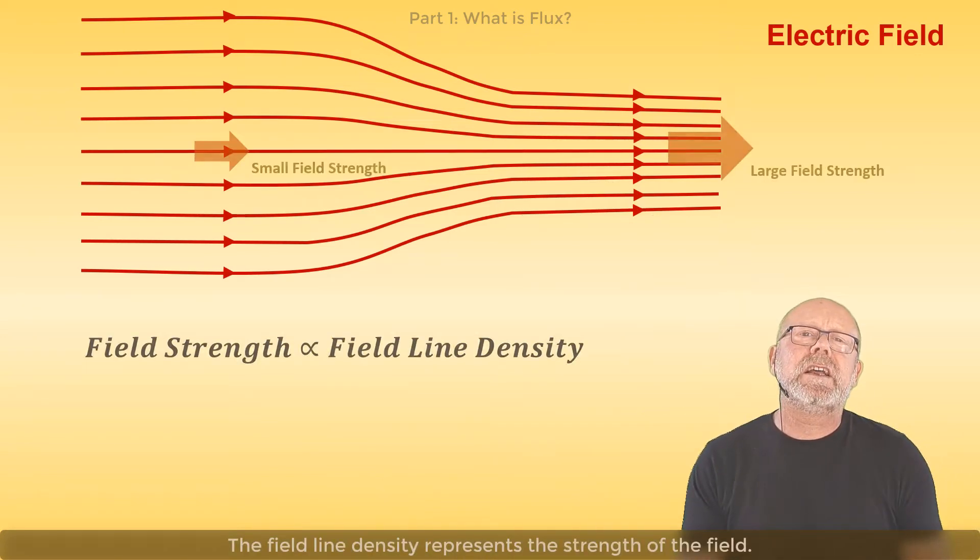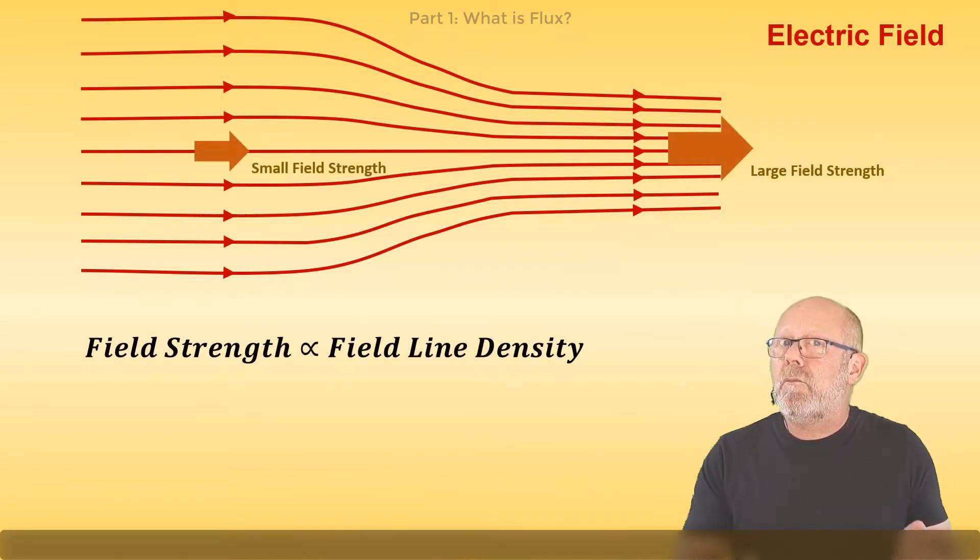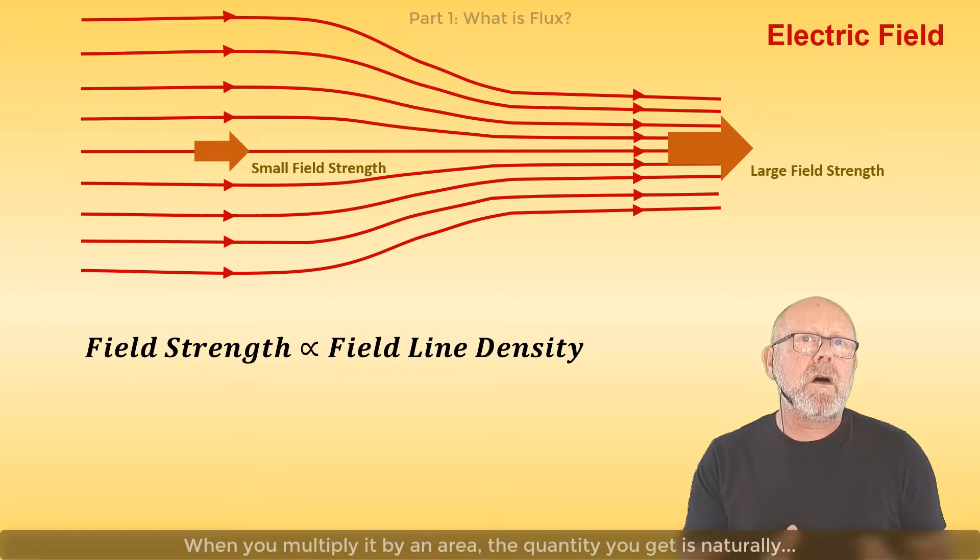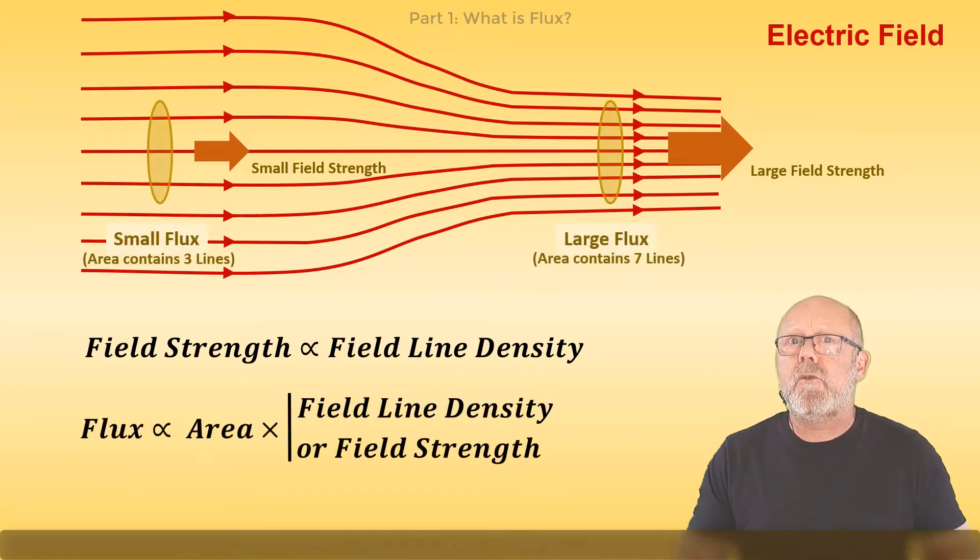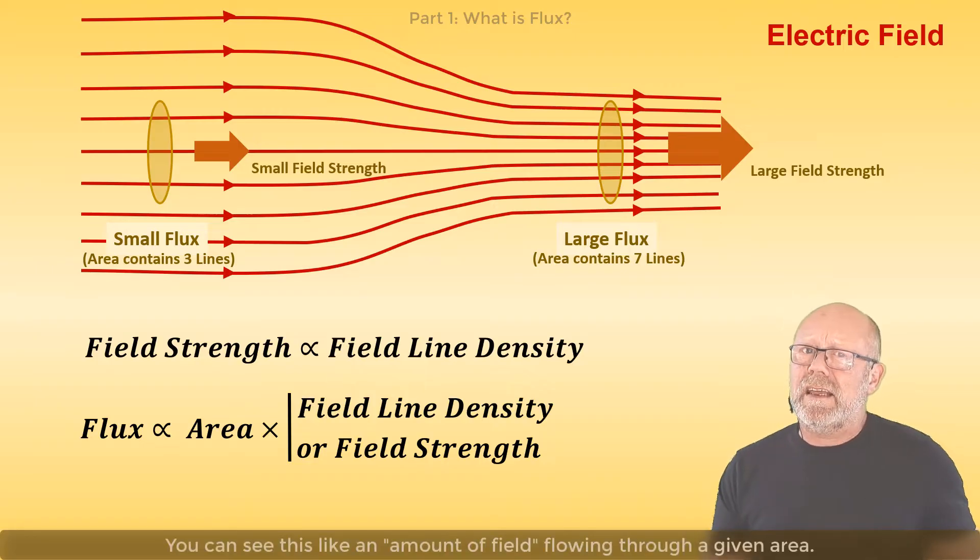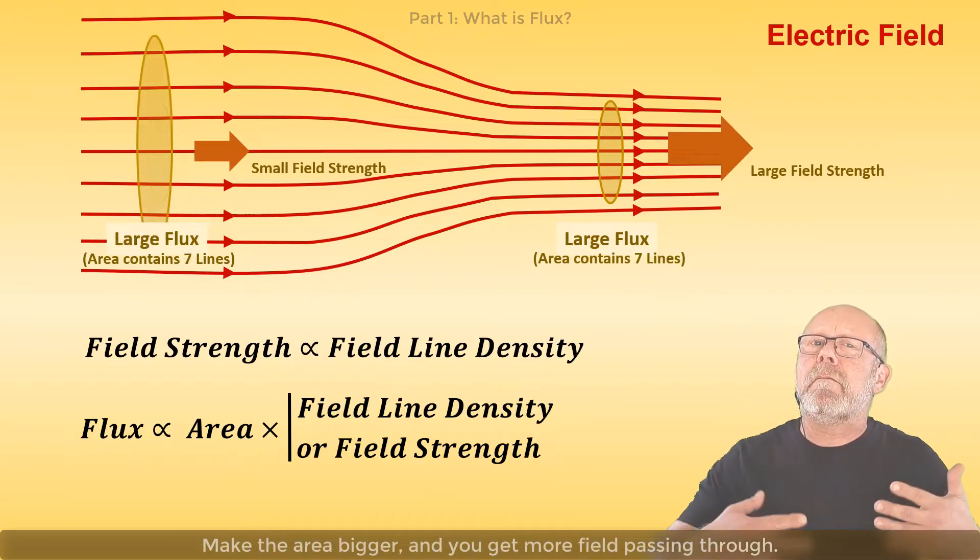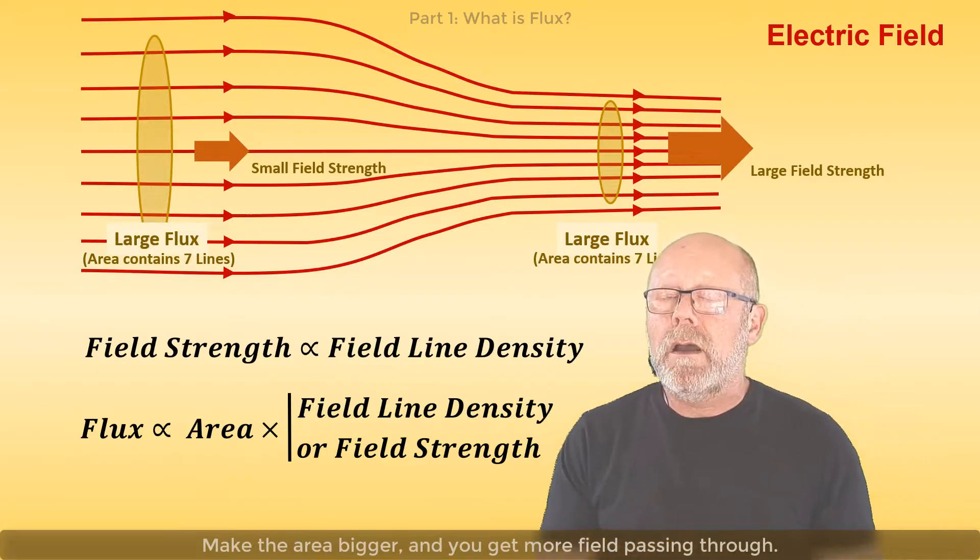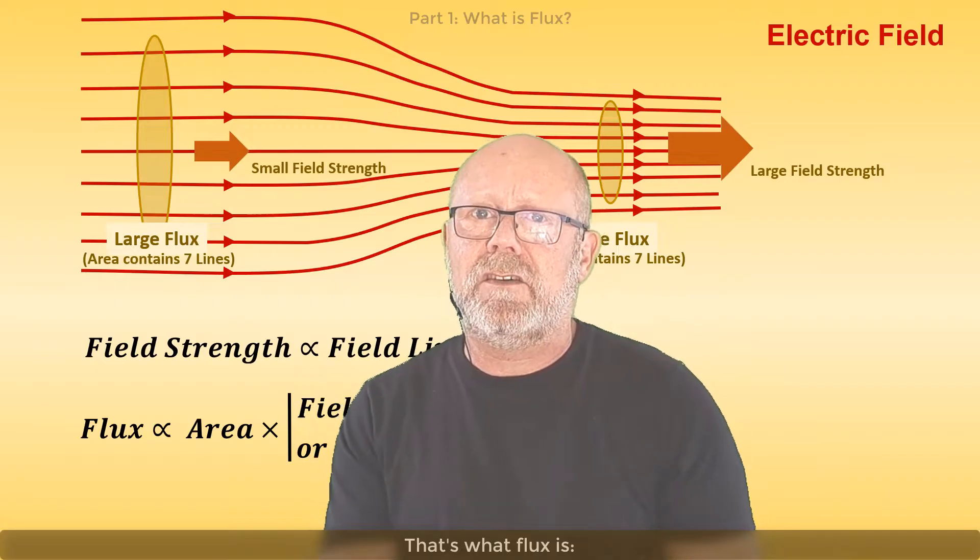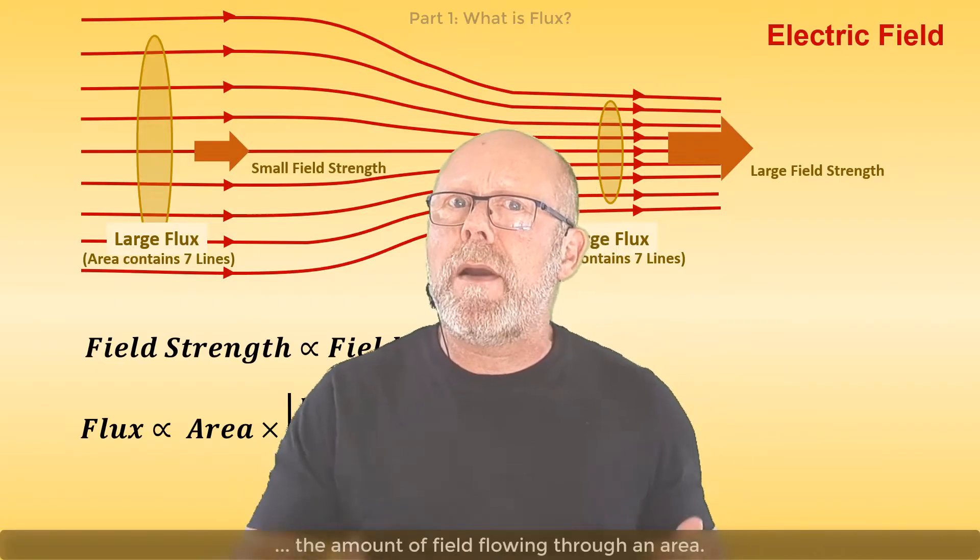The field line density represents the strength of the field. When you multiply it by an area, the quantity you get is naturally proportional to the number of field lines. You can see this like an amount of field flowing through a given area. Make the area bigger, and you get more field passing through. That's what flux is: the amount of field flowing through an area.